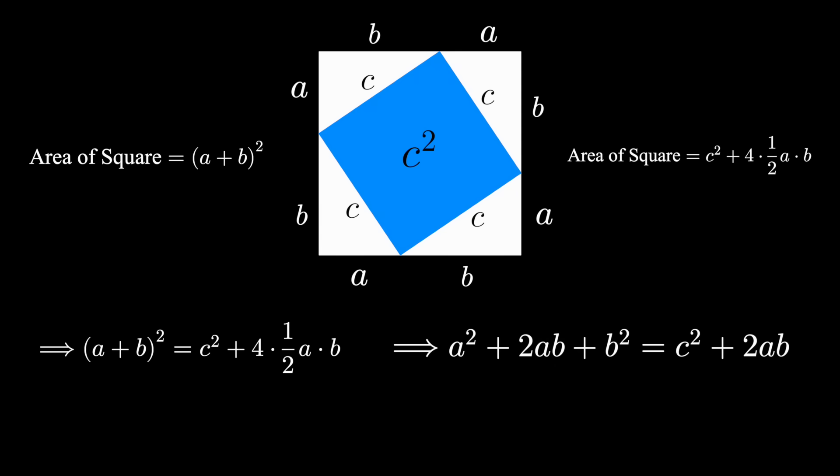Maneuver things around algebraically by distributing and canceling. We get a squared plus b squared is c squared, and you've just proved the Pythagorean theorem.